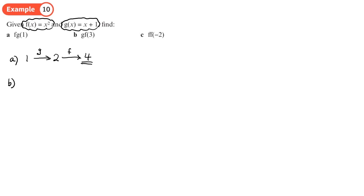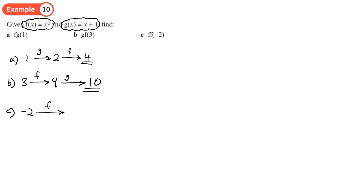For part b, we start with 3, put 3 into f which says square it, so you get 9. You put 9 into g, which gives 9 plus 1, so that's 10. For part c, we start with negative 2, put it into f which says square it so it becomes 4, and then we put it into f again so we end up with 16.